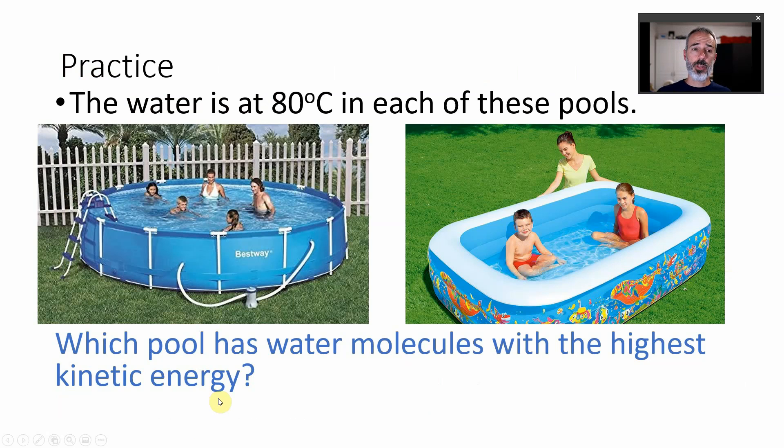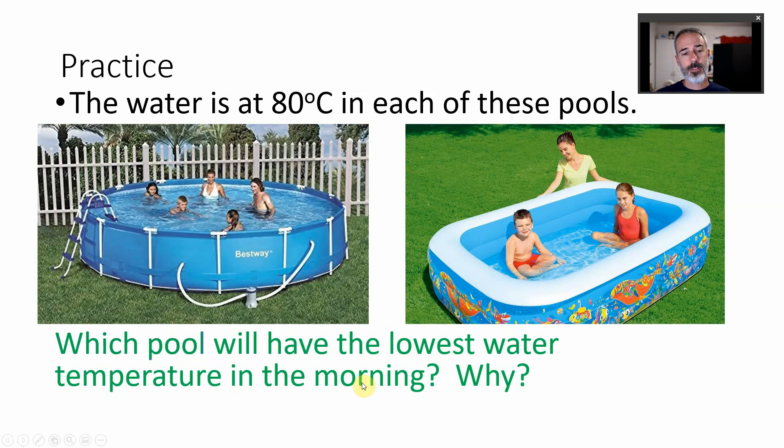Here's another example that kind of indicates that temperature and heat are not the same thing. Look at these two pools. If they were both at 80 degrees Celsius on a summer day and then you left them out at night and it cooled down way down let's say it cooled down to 30 degrees Celsius which one of these two would see the bigger change in temperature overnight?